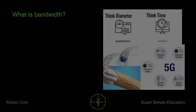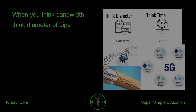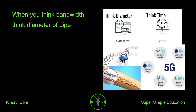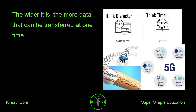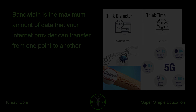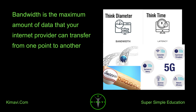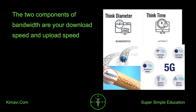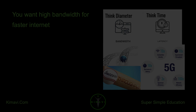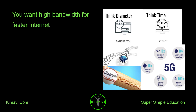What is bandwidth? When you think bandwidth, think diameter of pipe. The wider it is, the more data that can be transferred at one time. Bandwidth is the maximum amount of data that your internet provider can transfer from one point to another. The two components of bandwidth are your download speed and upload speed. You want high bandwidth for faster internet.